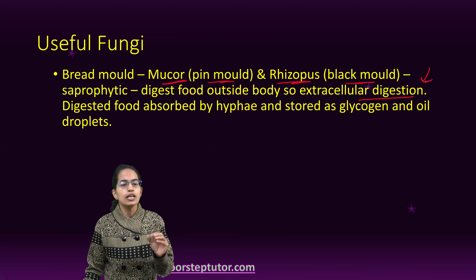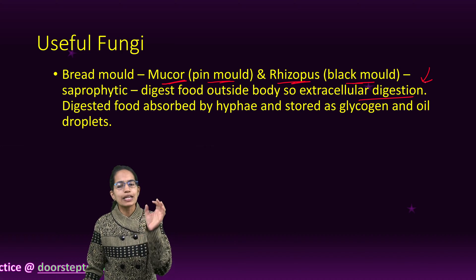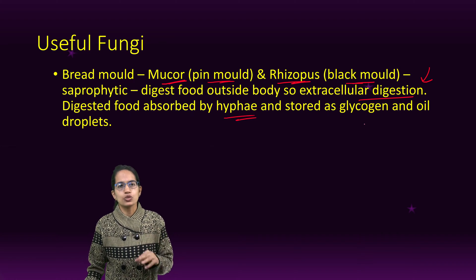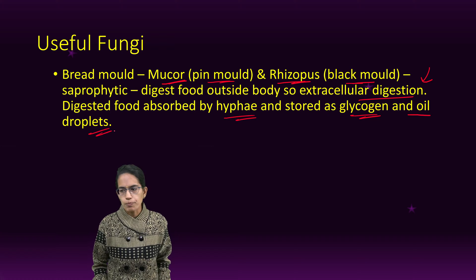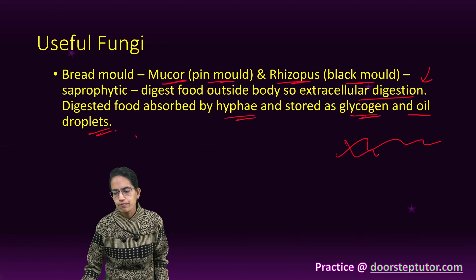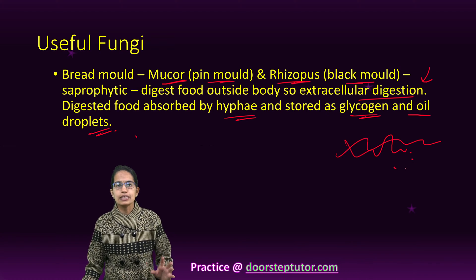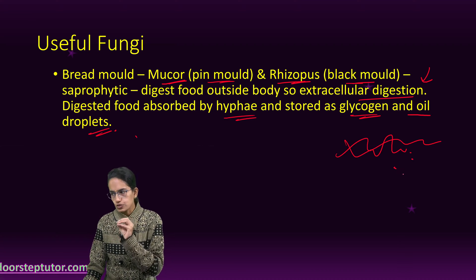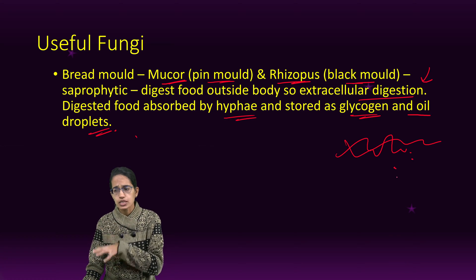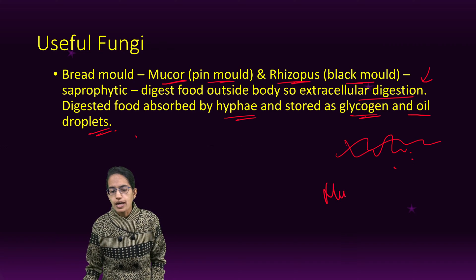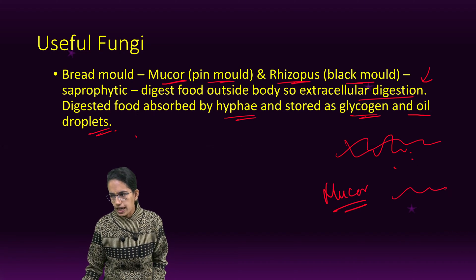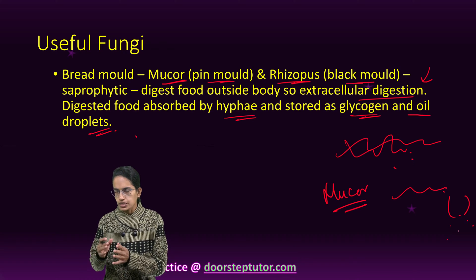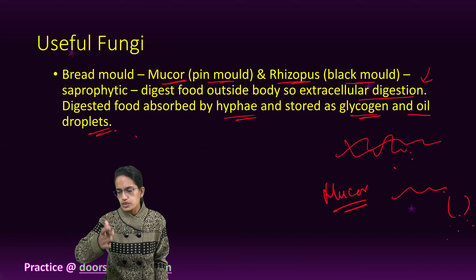The digested food is absorbed by hyphae and stored in two forms: either glycogen or oil droplets. A network of mycelium is formed, and this network has a cell wall rich in chitin. There is no chlorophyll, it is non-motile, and reproduces asexually. Both Mucor and Rhizopus have branched hyphae. The cell wall is made of cellulose, and aseptate hyphae is seen — meaning the cytoplasm is not partitioned into separate cells.